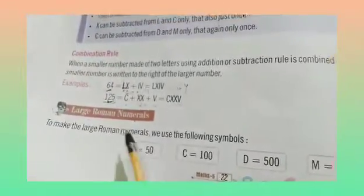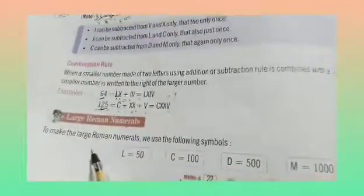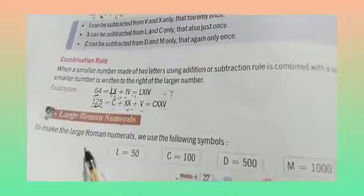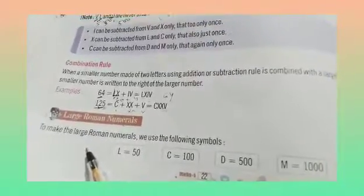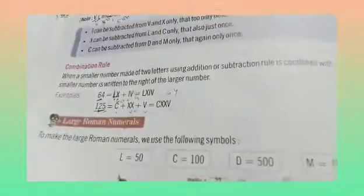Our next topic is Large Roman Numerals. In the previous topic we covered Roman Numeral rules: addition, multiplication, subtraction, and combination rules. In this topic we will learn about large numbers. L is 50, C is 100, D is 500, and M is 1000. By using these numerals we can make large numbers.